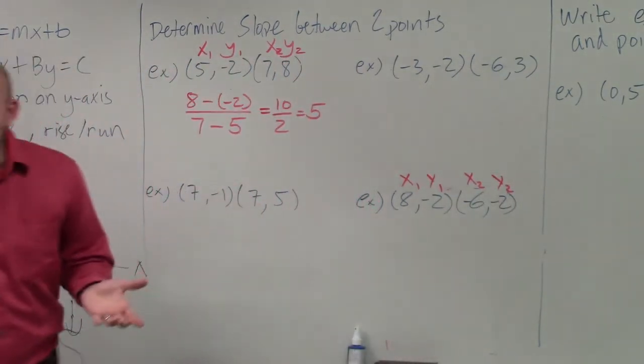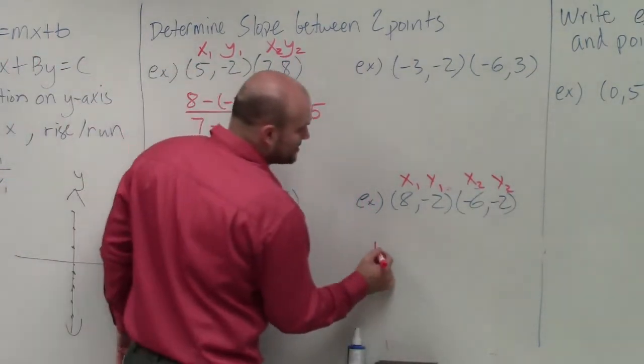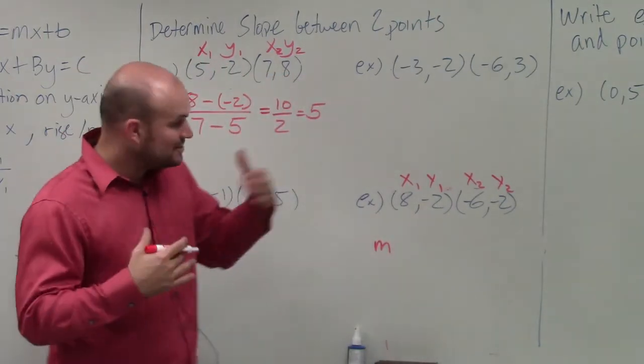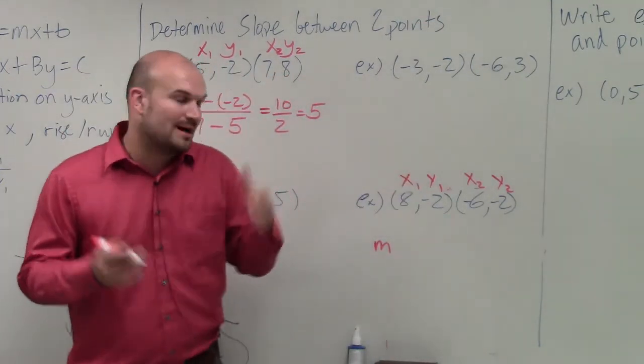OK? So just be consistent with that. Again, going ahead and using my slope, it's going to be y2 minus y1 over x2 minus x1.